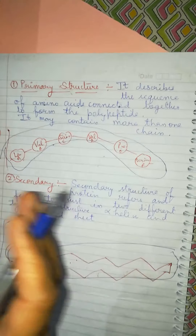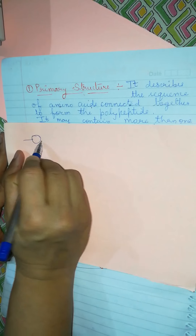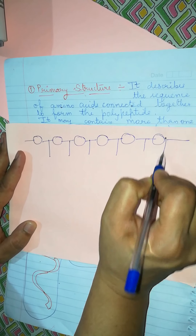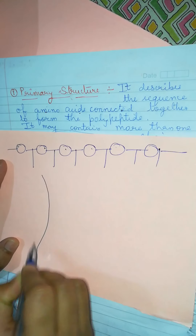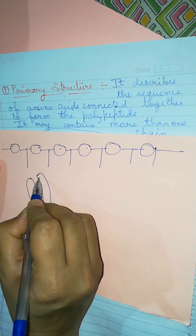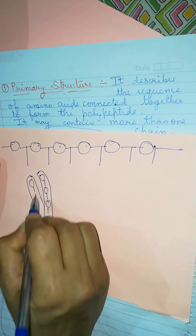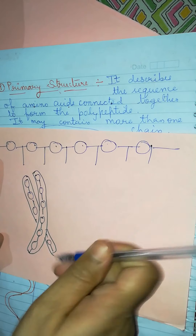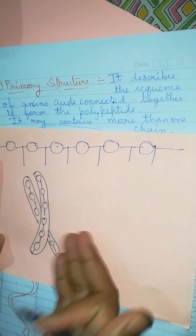Primary structure describes the sequence of amino acids. The simple structure of primary shows how different types of amino acids are attached, and we can simply identify the peptide bonds and the amino acids — it is like one fiber strand, then another fiber strand. The proteins in this structure are attached as a single strand only. This is called the primary structure of protein. This primary structure may contain more than one chain.